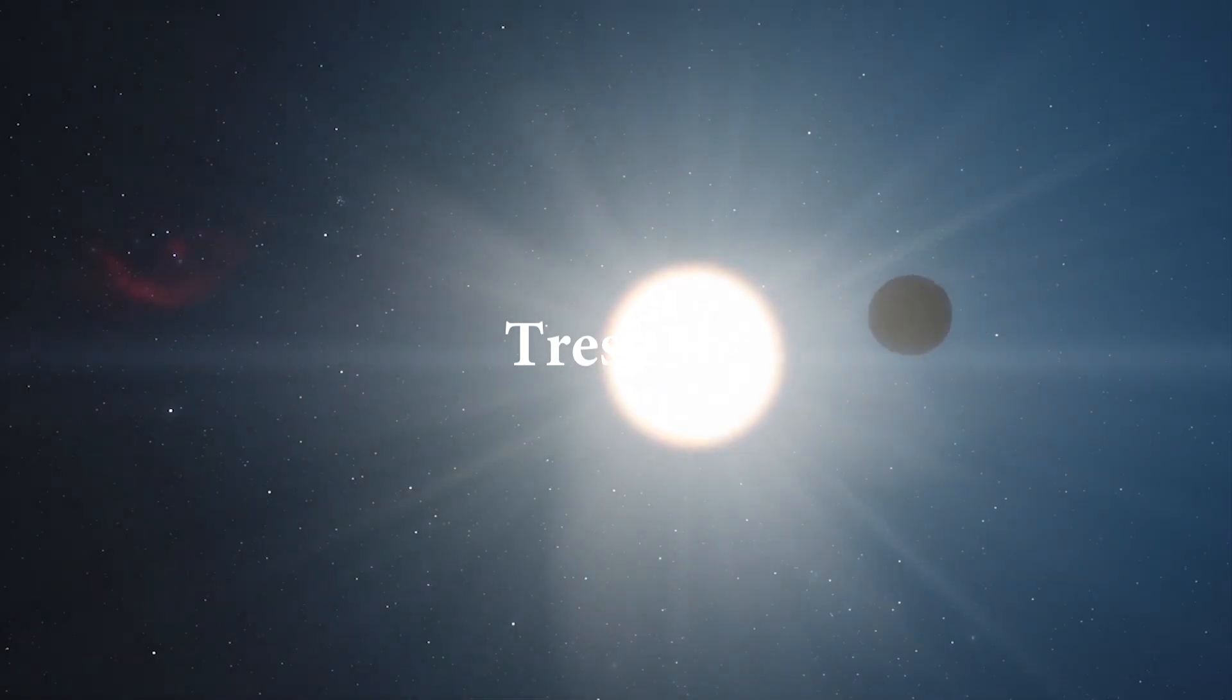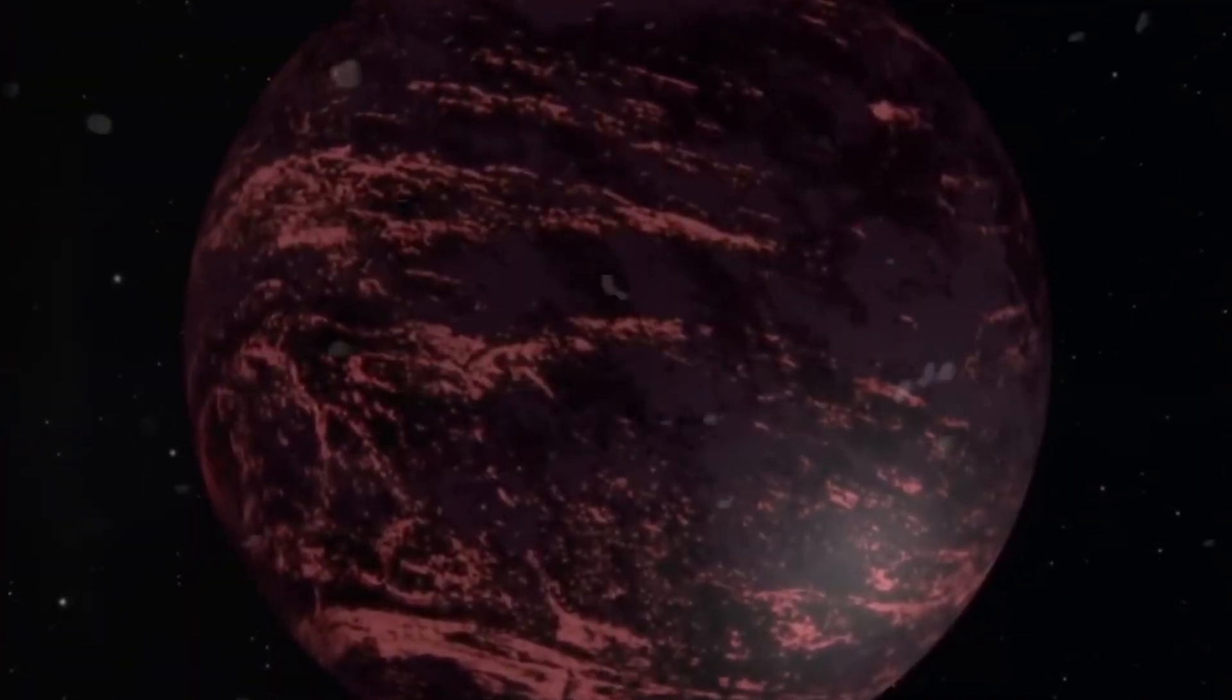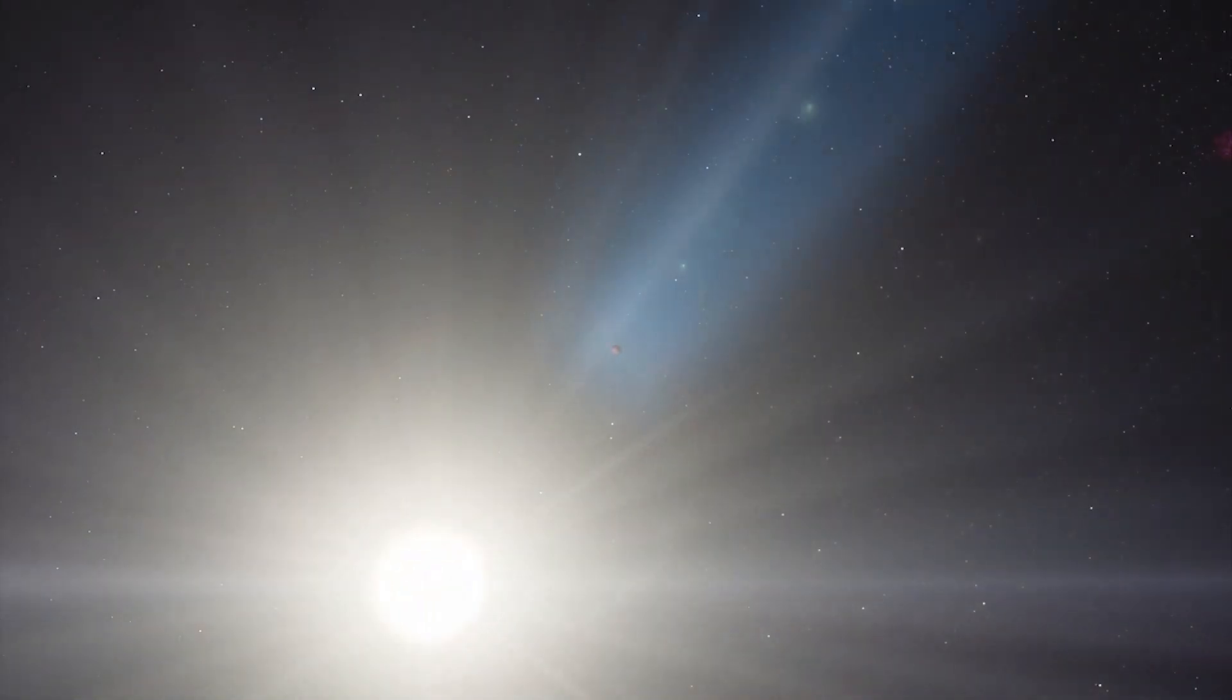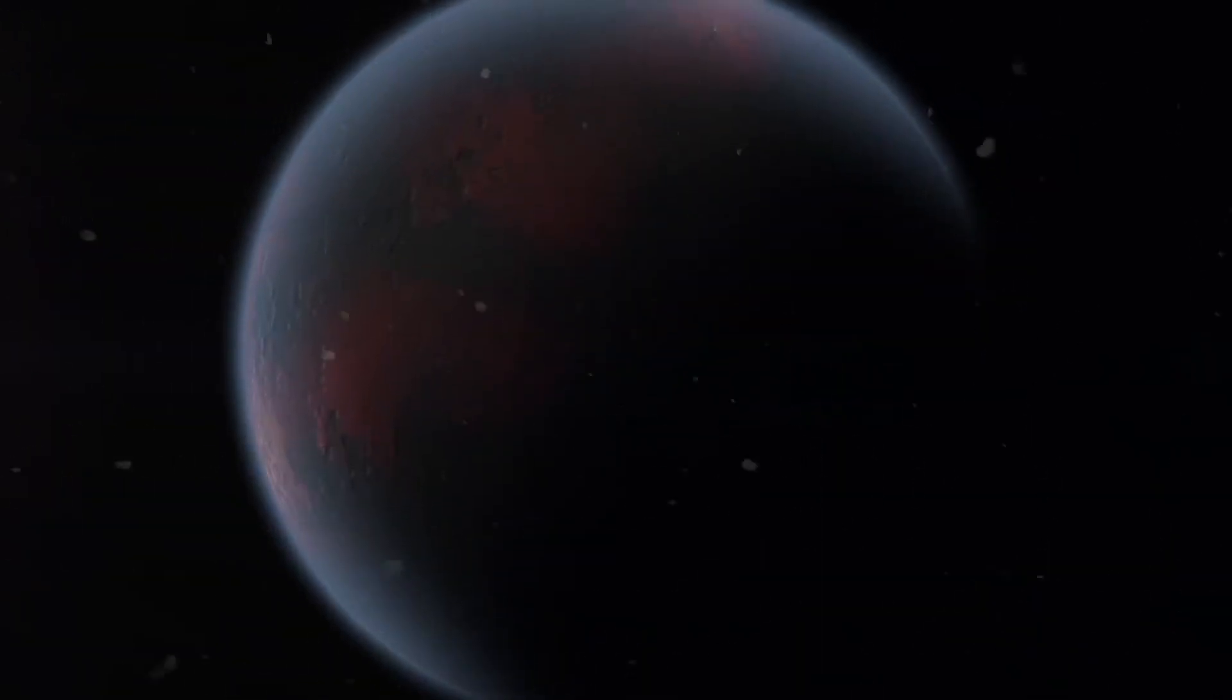TRES-3b is one of the darkest exoplanets discovered. It reflects less than 1% of light that falls on it, making it darker than coal and one of the least reflective objects in the known universe.